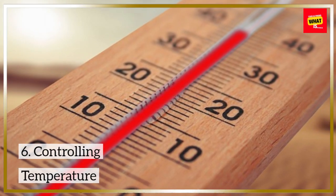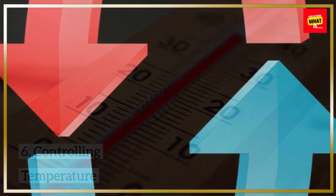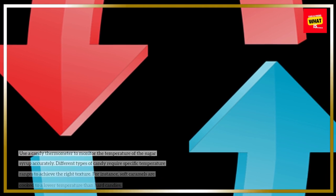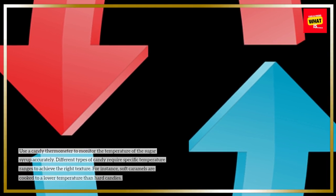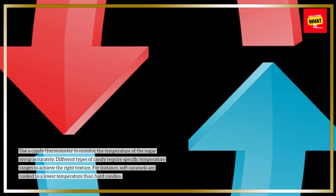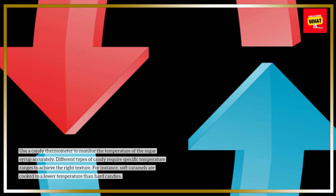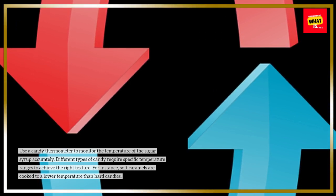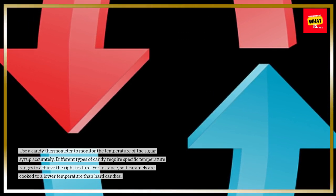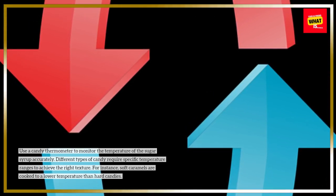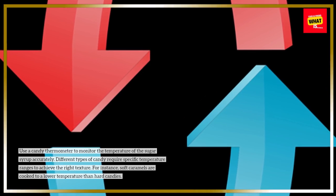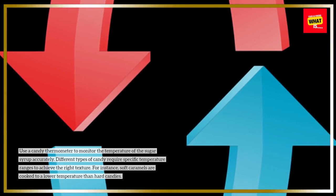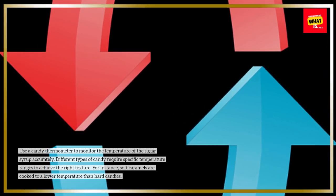Controlling Temperature: Use a candy thermometer to monitor the temperature of the sugar syrup accurately. Different types of candy require specific temperature ranges to achieve the right texture. For instance, soft caramels are cooked to a lower temperature than hard candies.